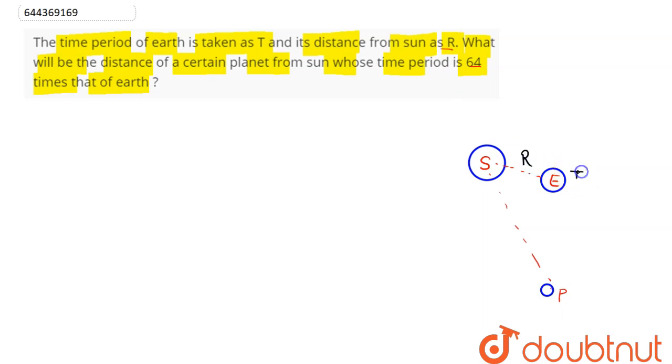For distance R, time period is T. Now if time period becomes 64 times that of Earth, that is T dash is 64 times T, then what will be the distance between sun and the corresponding planet?